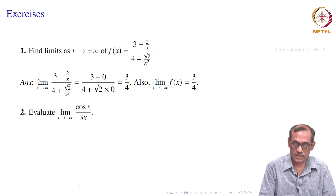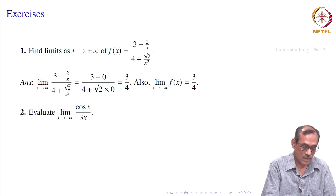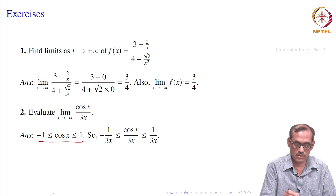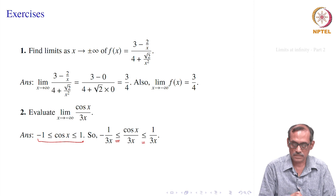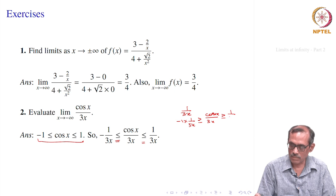Since cos(x) is bounded between minus 1 and 1, we can have an estimate and finish it using the Squeeze Theorem. For x less than 0, 1/(3x) is also negative. So minus 1 times 1/(3x) becomes positive, giving: minus 1/(3x) ≥ cos(x)·(1/(3x)) ≥ 1/(3x) for x less than 0. If x is positive the inequality is correct directly, but we are interested in x goes to minus infinity.